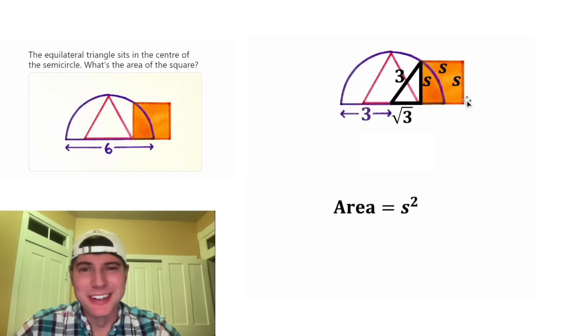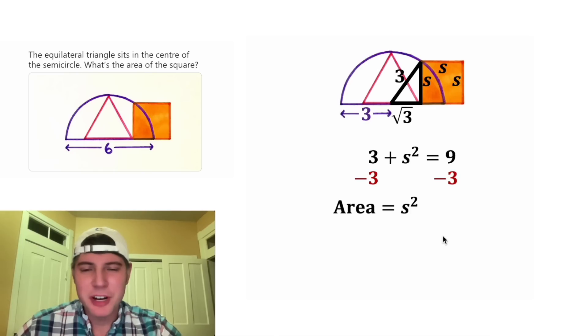Let's do Pythagorean theorem. It'll be root 3 squared plus S squared is equal to 3 squared. Over here, the square root and the square will cancel each other out. And 3 squared is equal to 9. After we subtract 3 from both sides, we end up with S squared is equal to 9 minus 3, which is 6.